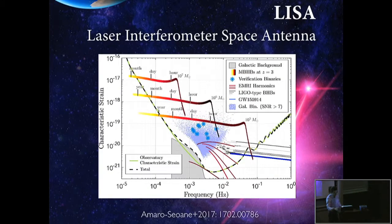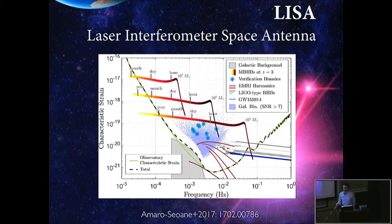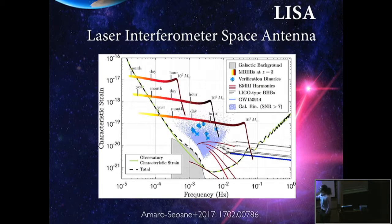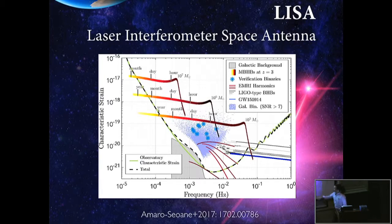Here we can look at a figure from this paper which gives the sensitivity curve over this frequency range. What's interesting are the potential sources plotted here. There are tracks of inspiral and merger of massive black hole binaries. At orbital periods corresponding to hours, a ten-to-the-five solar mass binary has about a year left of its inspiral—gravitational radiation will take it a year to come together, sweep across the LISA sensitivity curve, and merge. You can see similar tracks in LISA for larger, more massive black holes.